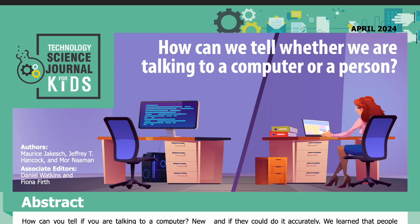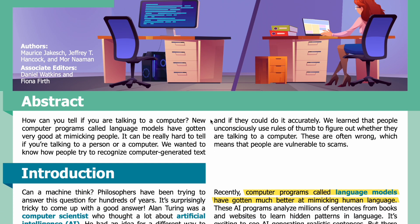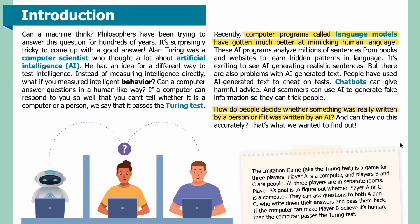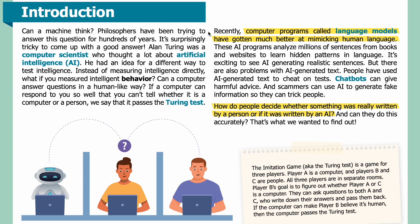Science Journal for Kids and Teens presents: How can we tell whether we are talking to a computer or a person? Read by Miranda Wilson. Abstract: How can you tell if you are talking to a computer? New computer programs called language models have gotten very good at mimicking people. It can be really hard to tell if you're talking to a person or a computer.